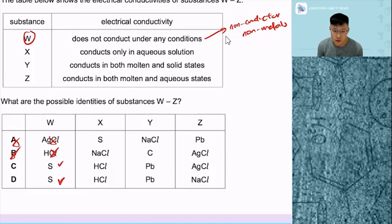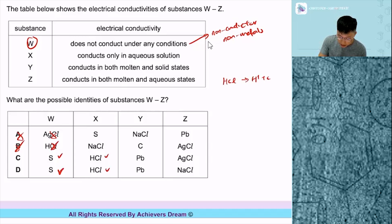Because in aqueous solution, HCl will become H plus plus Cl minus ions. Take note.